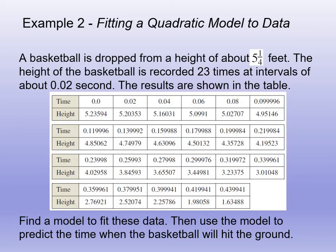So now when you hit stat and edit, you should have two clean lists. The X will be time. So under L1, you'll put in all the times, so 0.0, 0.02, 0.04, 0.06, 0.08, all the way up to 0.439941. And then the Ys, you'll put the height in for Y. So 5.23594, all the way up to 1.63488.